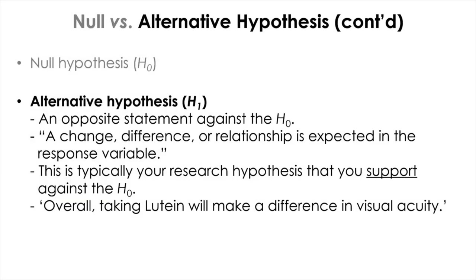The alternative hypothesis is the opposite statement against the null hypothesis H0. Typically, you assume a change, difference, or relationship in the response variable when setting up the alternative hypothesis. This is typically the research hypothesis you want to support against the null. In the lutein example, the alternative hypothesis will be: overall, taking lutein will make a difference in visual acuity.